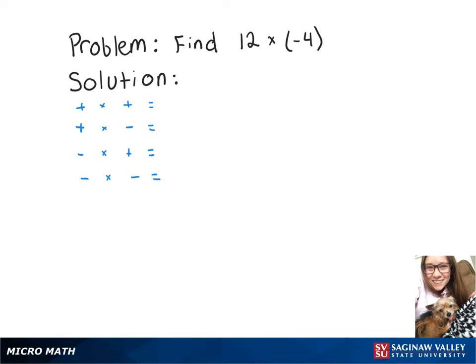In this video, let's find 12 times negative 4. First, we're going to review our rules of multiplying with negative numbers. Positive times positive gives you a positive. Positive times negative, you'll get a negative number. Same thing, negative times positive gives you another negative number. Negative times negative will give you a positive number.